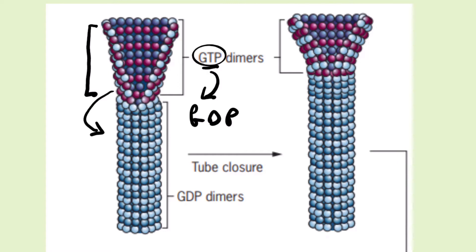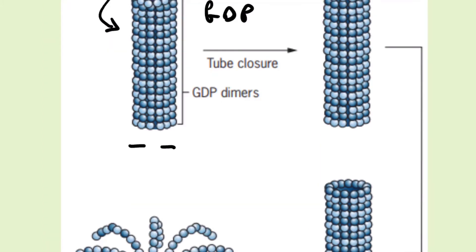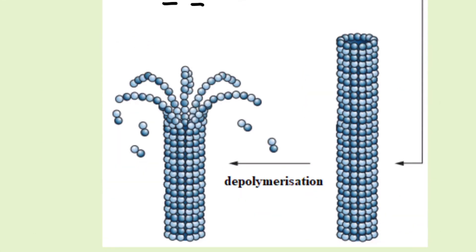A microtubule has a fast-growing end, or plus end, where polymerization keeps adding heterodimers into the forming tube. It also has a slow-growing end, or minus end, which will be embedded into the microtubule organizing center where polymerization begins. Disassembly or depolymerization will only occur when there are no more GTP-bound heterodimers left within the structure.